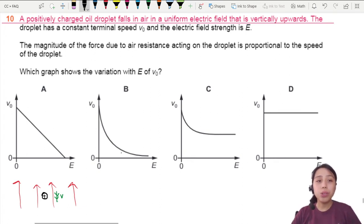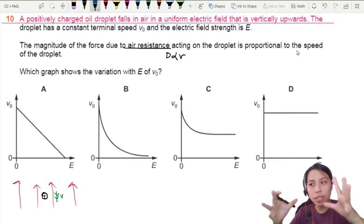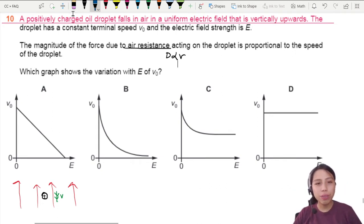The magnitude of force due to air resistance is proportional to the speed of the droplet. This is what we call the air resistance, we call it a drag force, and it's proportional to speed. You move faster, bigger drag force. Which graph shows the variation of electric field strength with the terminal velocity or terminal speed?